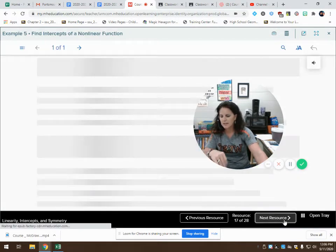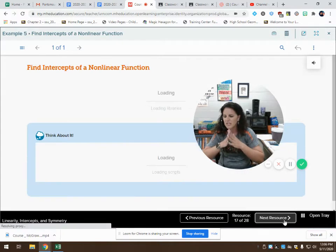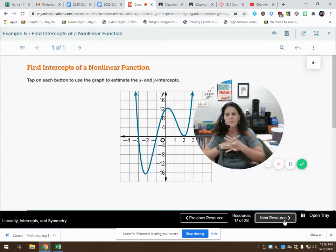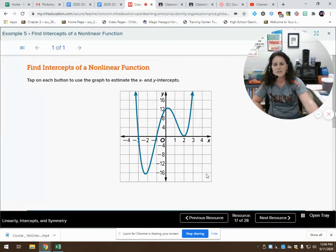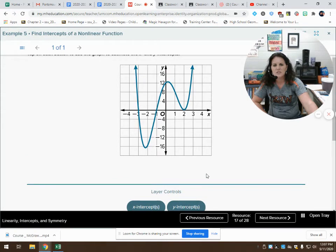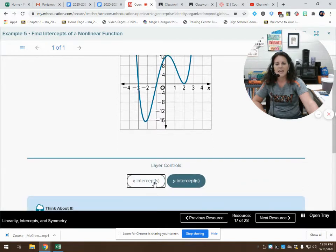Moving on to example five, still on page 15 in your workbook. Tap on each button to use the graph to estimate the x and y intercepts. Looks like we may have more than one x intercept. Is that possible? Of course we are.